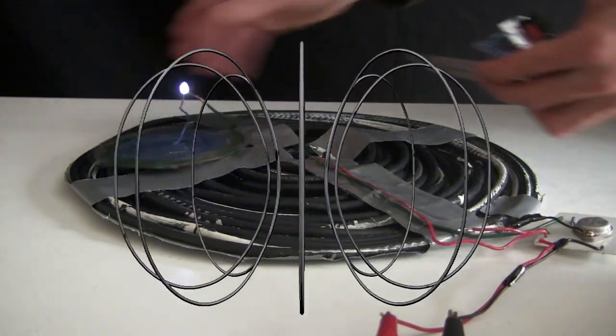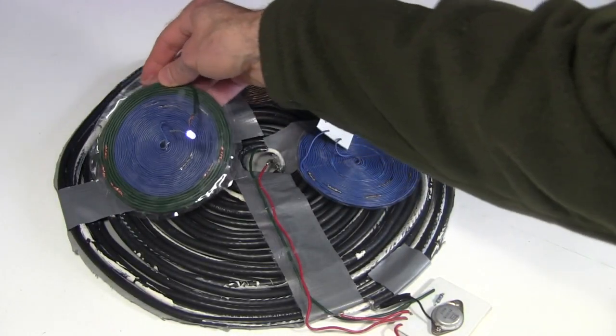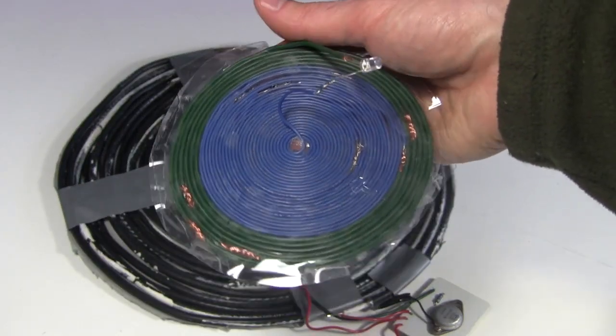So to capture that energy, we need to put some sort of receiver inside the field. For the receivers, we have these smaller flat coils. We connect whatever we want to power to those receiver coils.